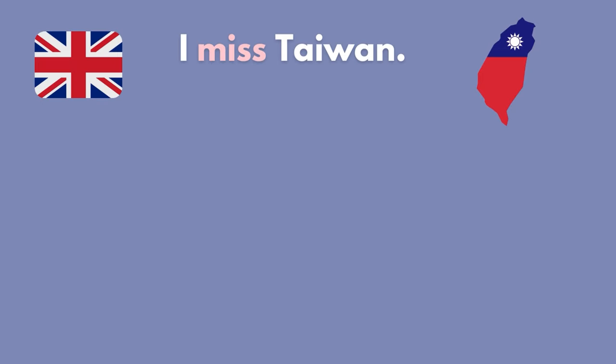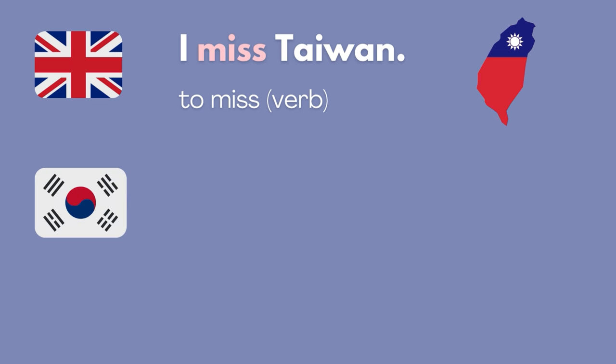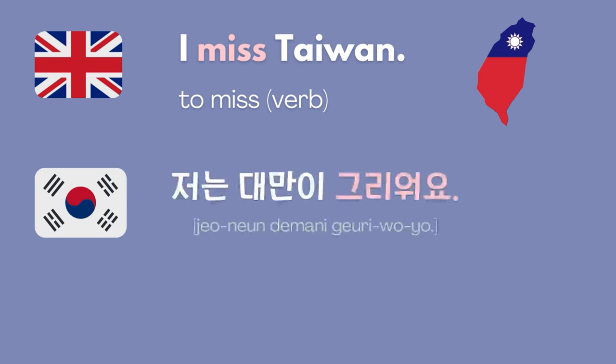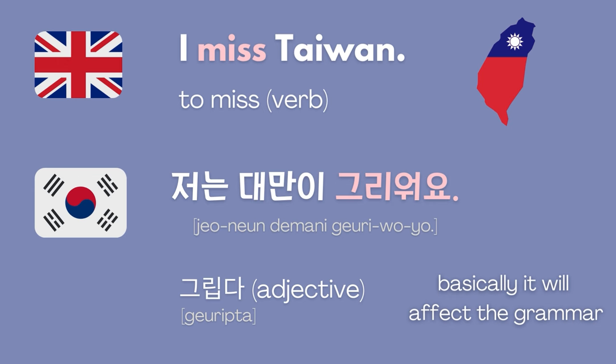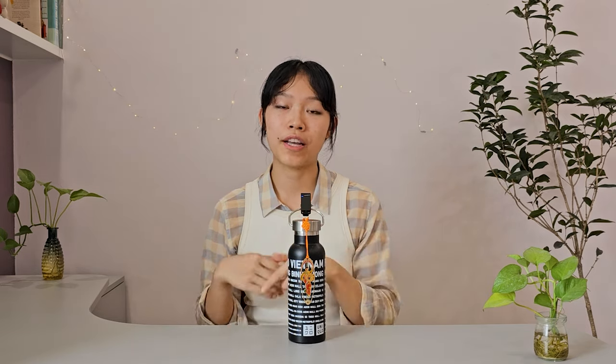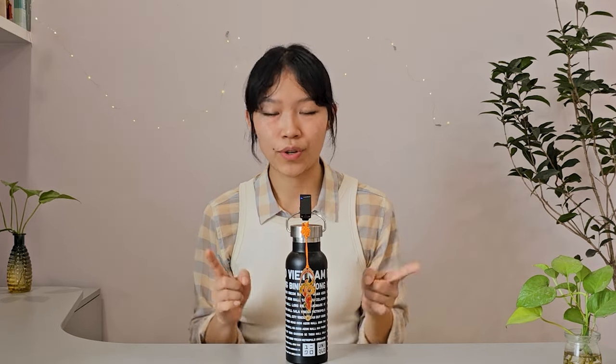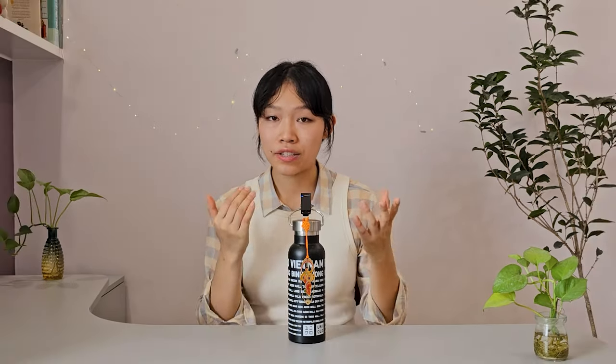For instance, I went to Taiwan last year and I might say 'I missed Taiwan.' In English, 'to miss' is a verb. In Korean, this sentence would be 저는 대만이 그리워요. But 그립다 is actually an adjective, not a verb, which affects the topic or subject marker you use for that sentence. This is not the only occasion I've mistaken verbs for adjectives or vice versa, because I'm still translating sentences from Korean into English in my head — which I'm trying to stop — but because I still do this, mistakes like these still happen.